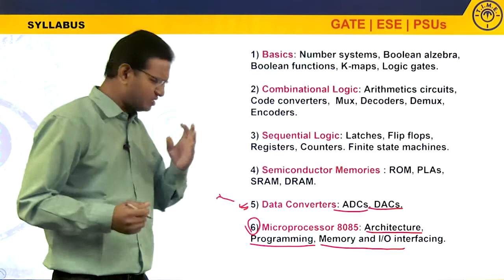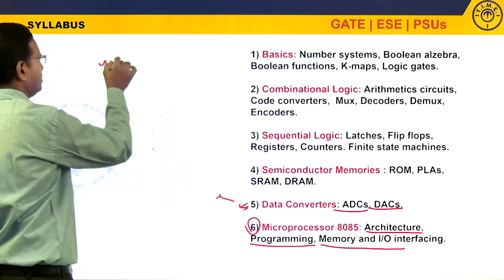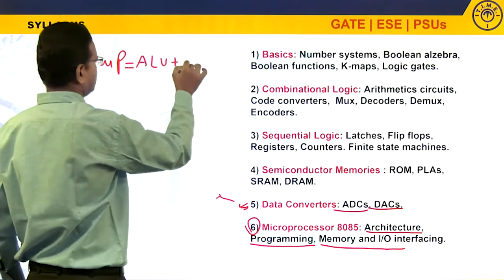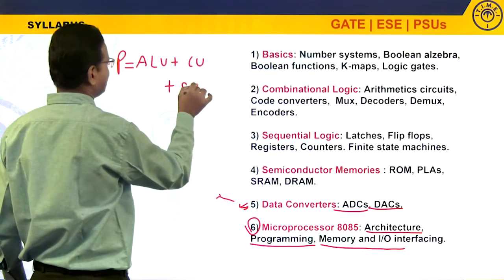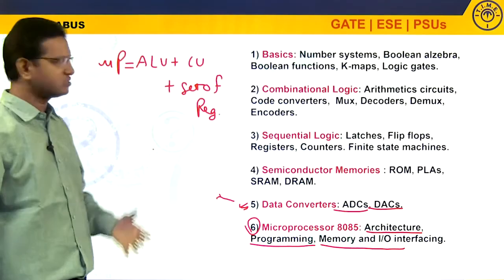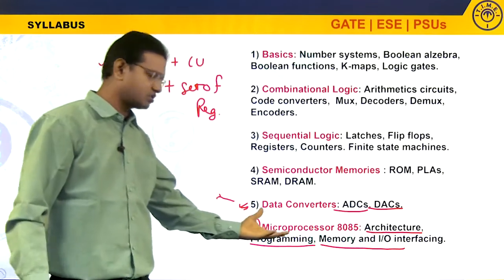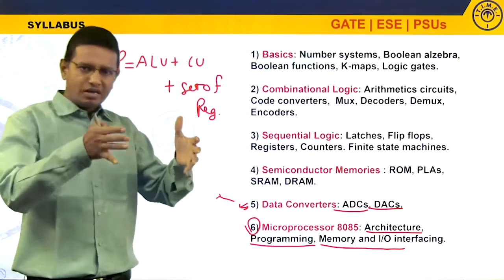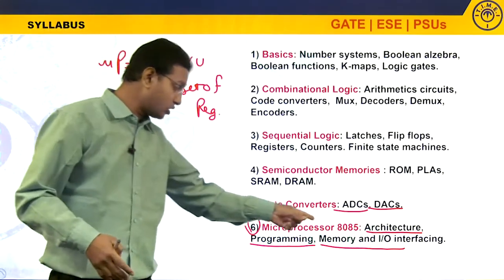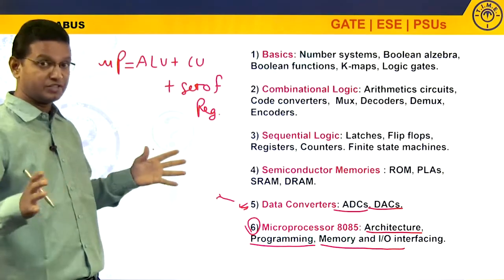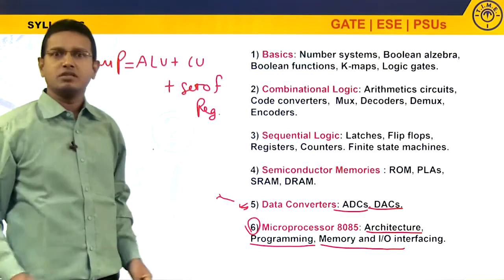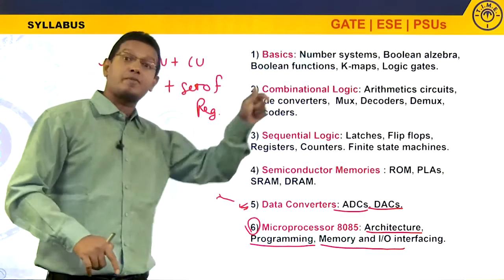Basically, a microprocessor has three units: the arithmetic logic unit, the control unit, and a set of registers. These three units integrated on a single silicon chip is called a microprocessor. If the ALU, control unit, and set of registers are on different chips, then you do not call it a microprocessor — you call it a central processing unit.